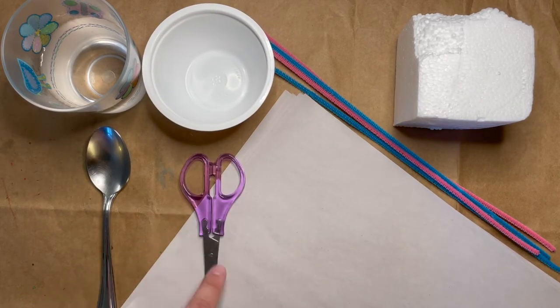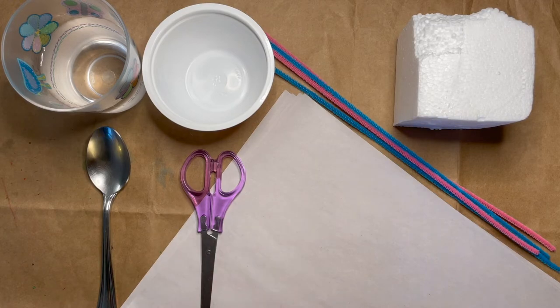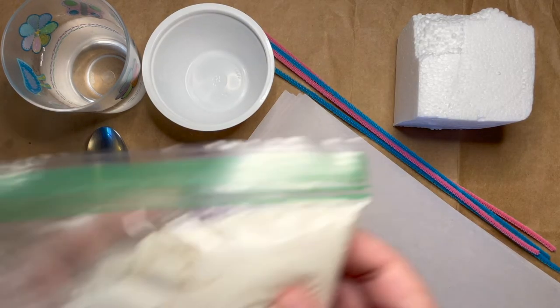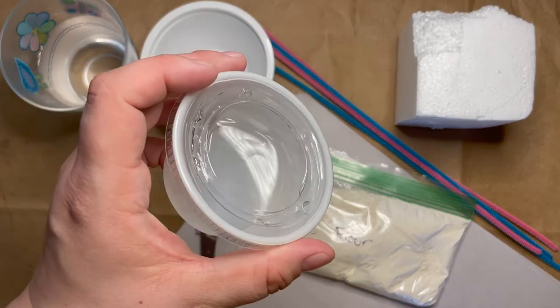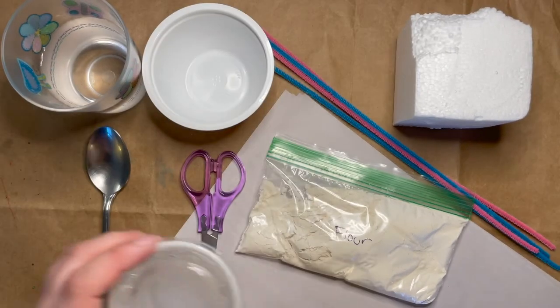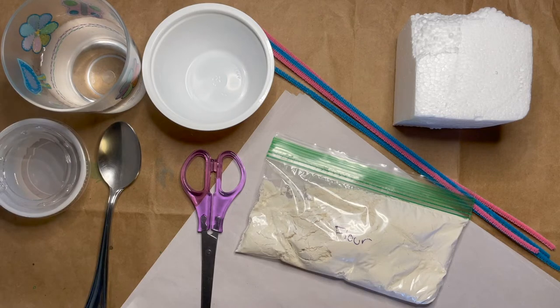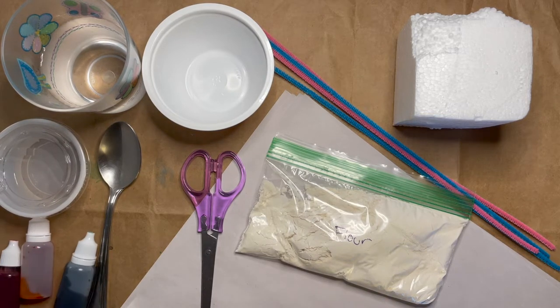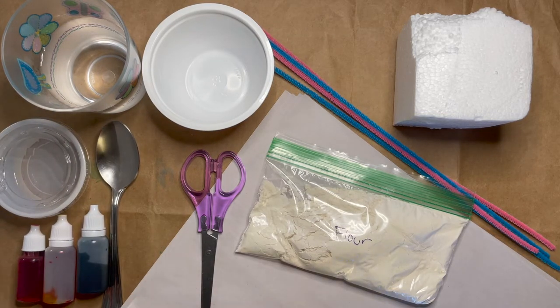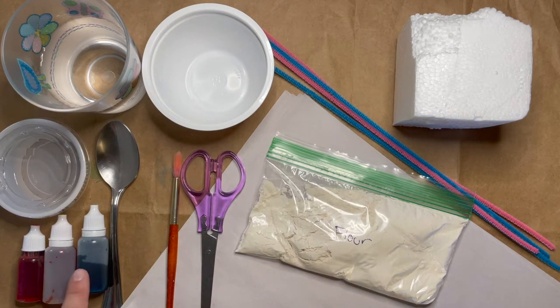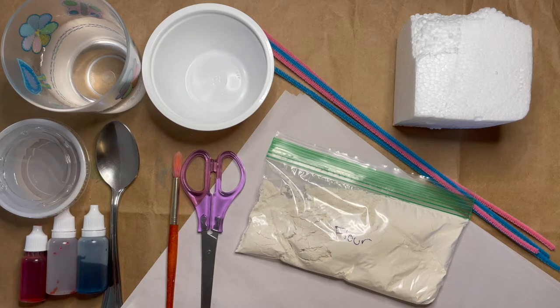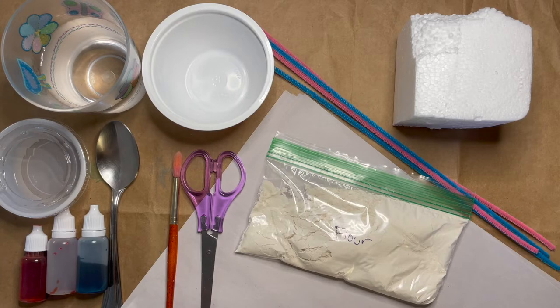You might want your scissors, but you can also rip your newsprint instead. You'll want the small bag of flour from your kit, the clear glue from your kit, and your food colors. You might also want to grab a paintbrush from home. You can pause the video here and go get all of your supplies.